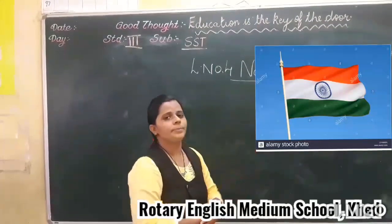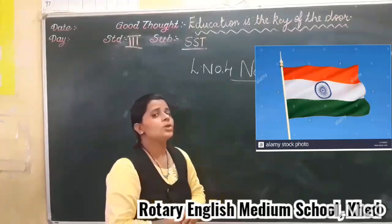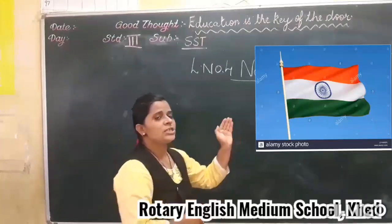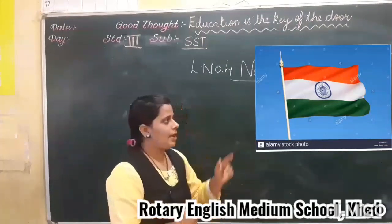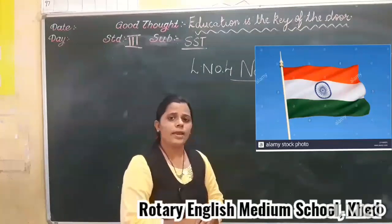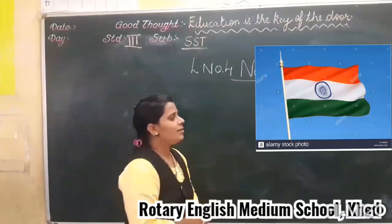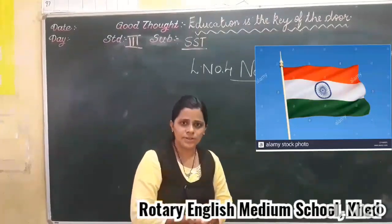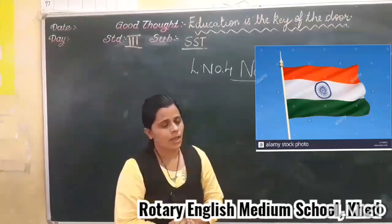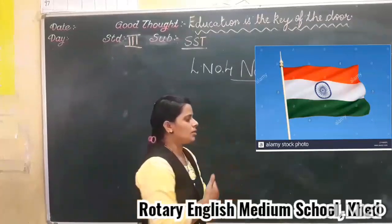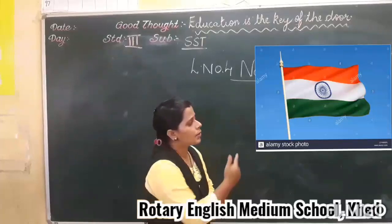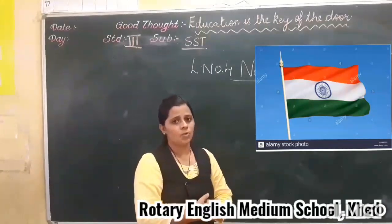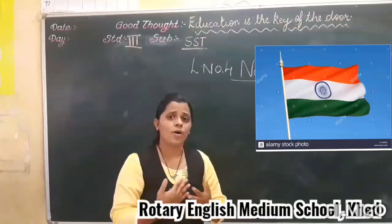What is the color on the top? It is saffron. The saffron color indicates the courage and sacrifice of our country. And the white color shows truth and peace. And the green color tells us about the prosperity of our country. Each color represents something. In the middle, you see the Ashoka Chakra, and there are 24 spokes. This tells us about the growth and progress of our country.